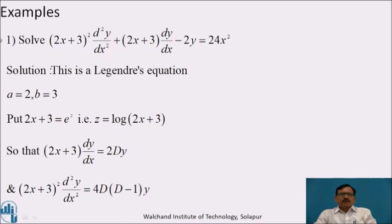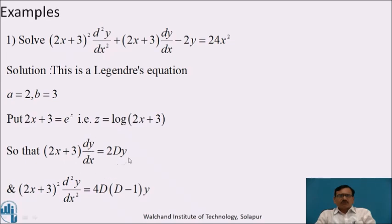Now we will solve a complete example: (2x + 3)² d²y/dx² + (2x + 3) dy/dx - 2y = 24x². This is clearly a Legendre's equation. Comparing, a = 2 and b = 3. Put 2x + 3 = e^z, i.e., z = log(2x + 3), so that (2x + 3) dy/dx = 2·D(y) and (2x + 3)² d²y/dx² = 4·D(D-1)y.